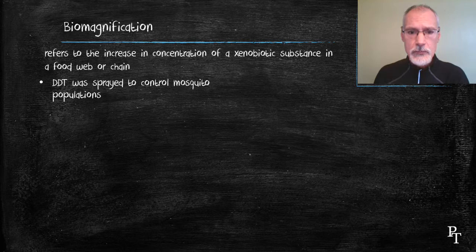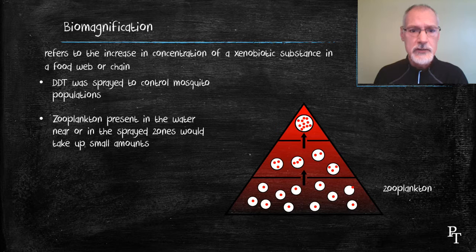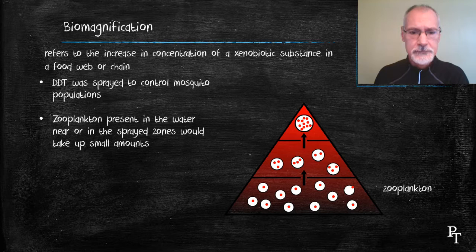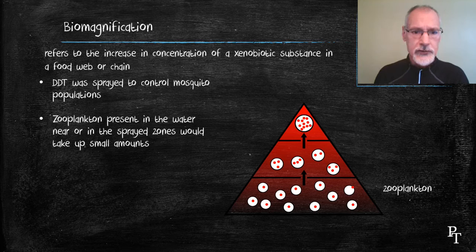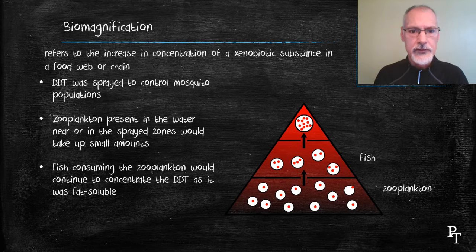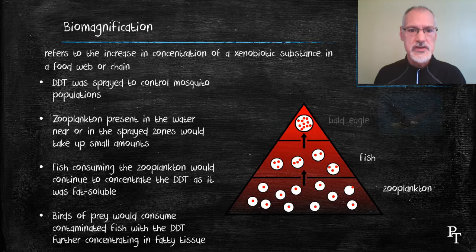But it was later discovered that DDT that essentially wasn't used to kill the mosquitoes that was widespread would pool in bodies of water. There it would be consumed by zooplankton, although in very low concentrations. Fish that would feed on that zooplankton would selectively absorb it. DDT is fat-soluble and as a result would concentrate in the fat tissues of the fish.